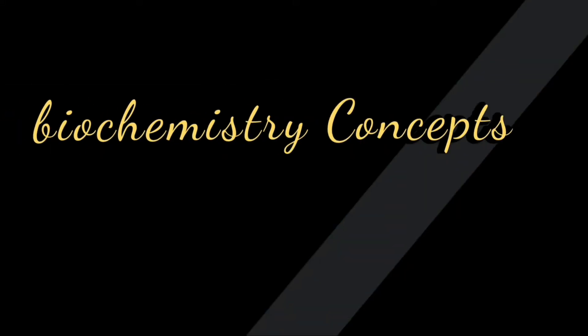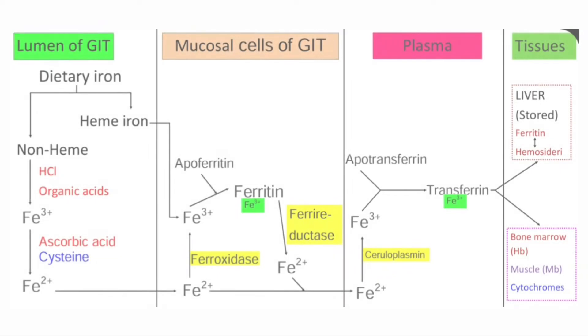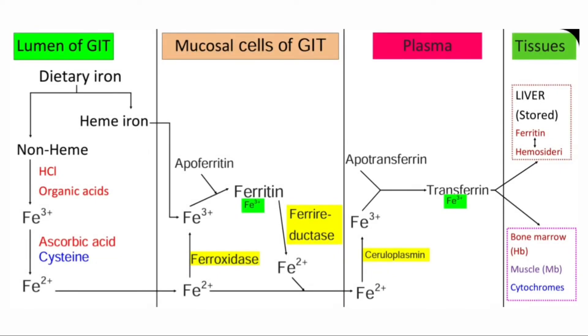Hello everyone, welcome to my channel Biochemistry Concepts. Iron that we take in the diet is of two types: one is heme iron and the second one is non-heme iron.